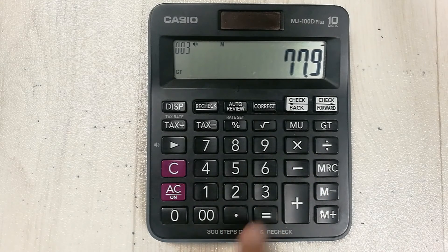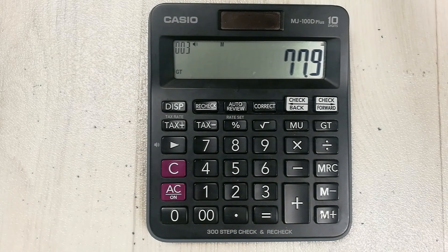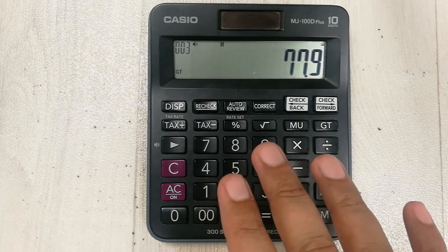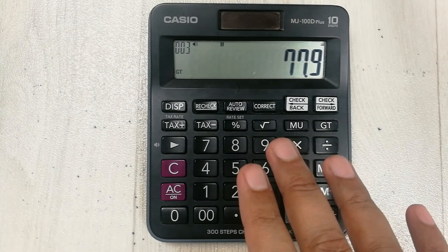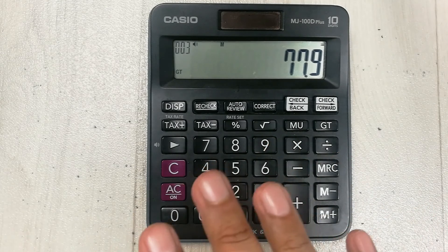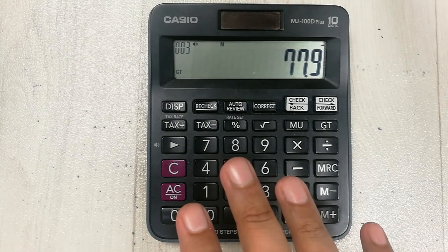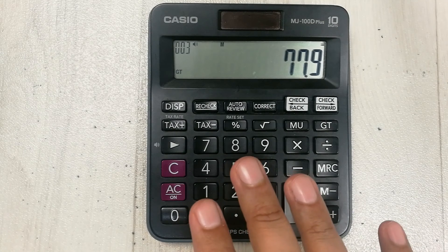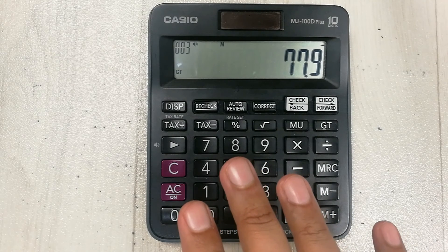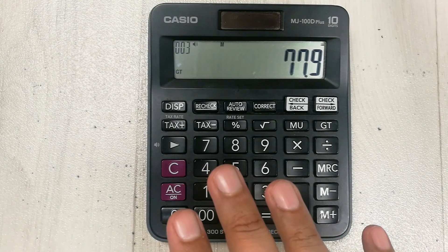And then press the equal button. So here is your final answer. So you got 77.9 percent. So guys, you always have to multiply your CGPA with 9.5 to convert your CGPA into percentage.